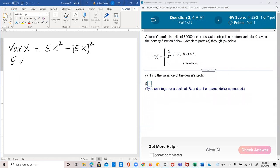So E of x squared in this case would be the integral 2 x squared times 2 over 27 times 6 minus x dx from 0 to 3. We can pull the 2 over 27 out and multiply the x squared with the 6 minus x so you get 6x squared minus x cubed dx. And now we can integrate.